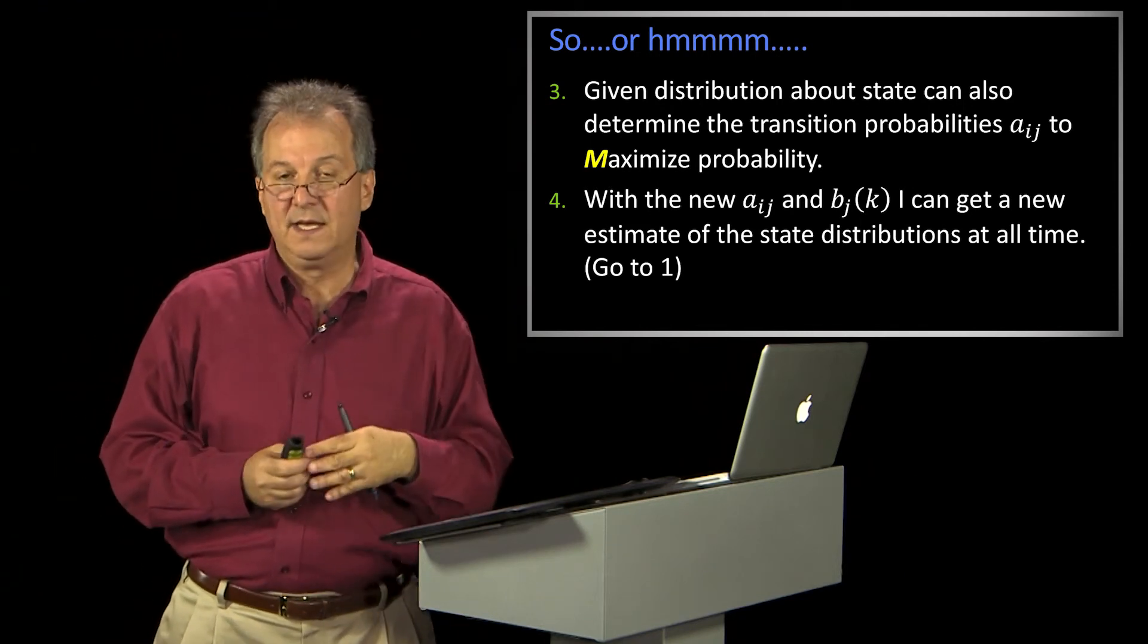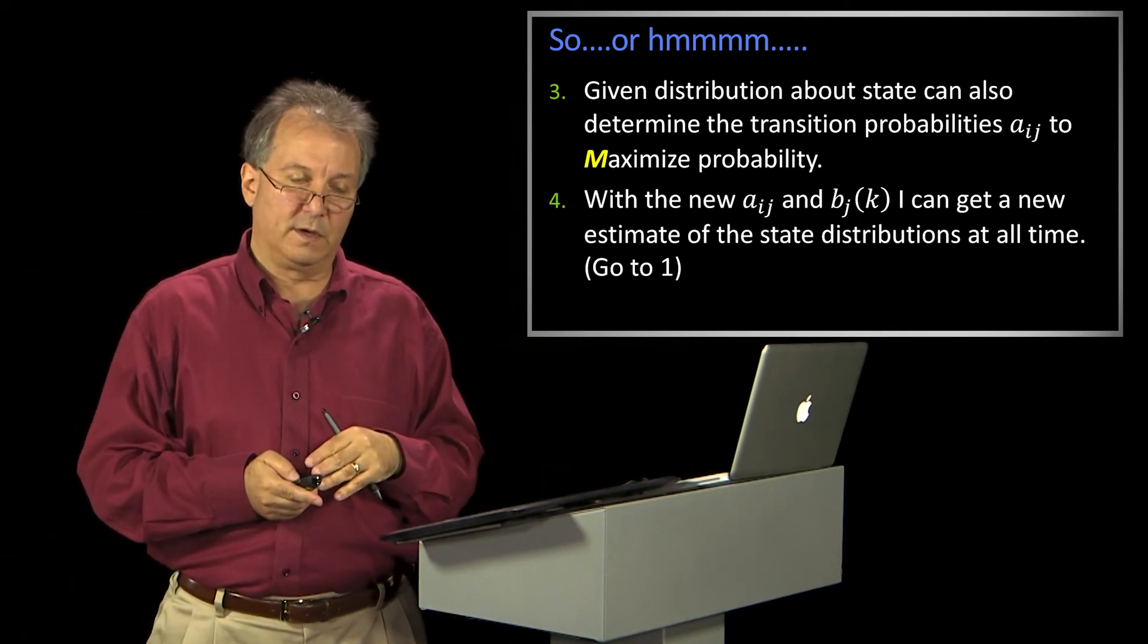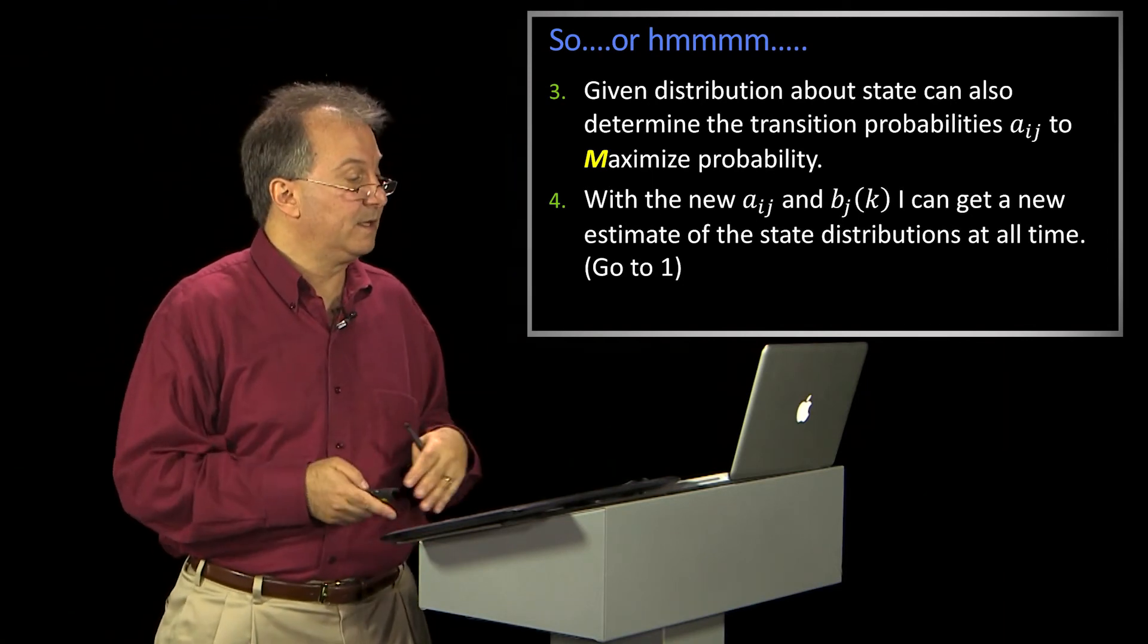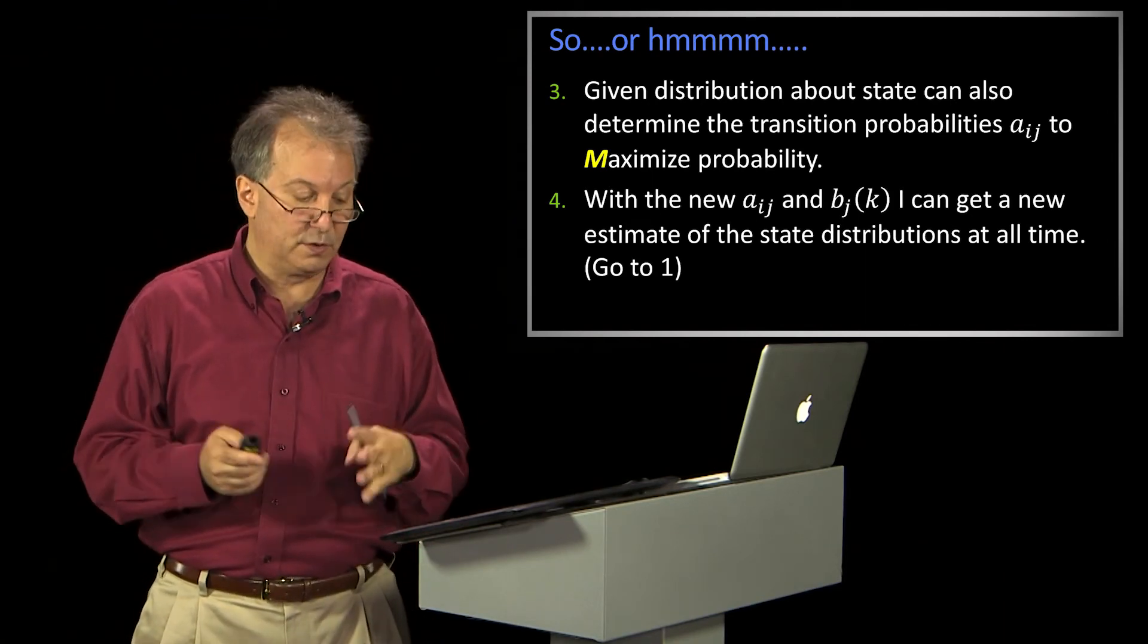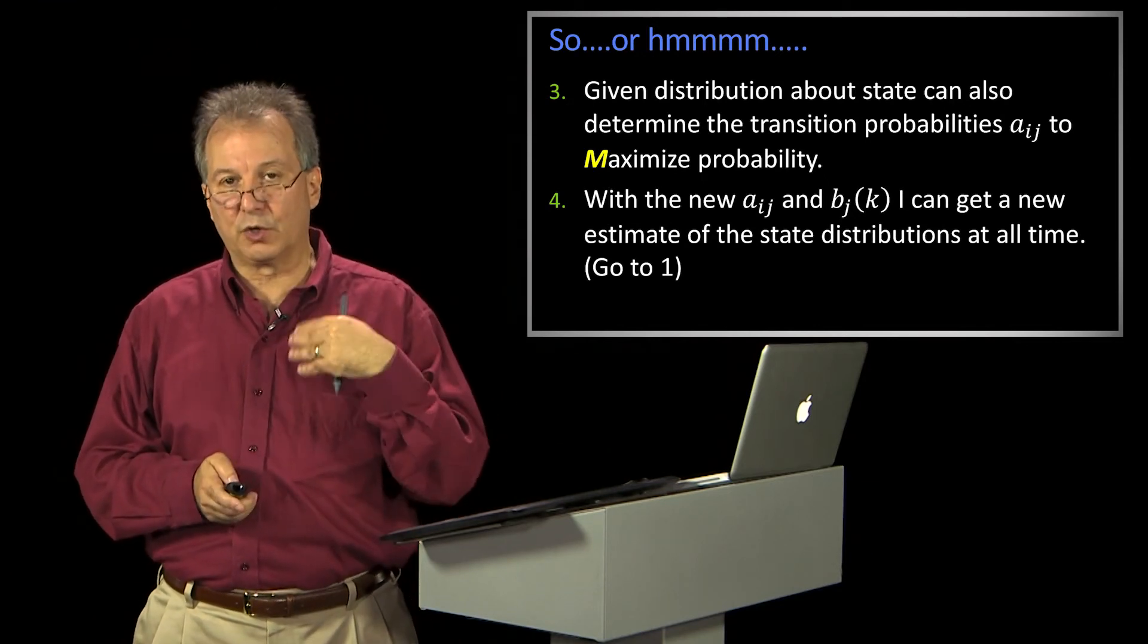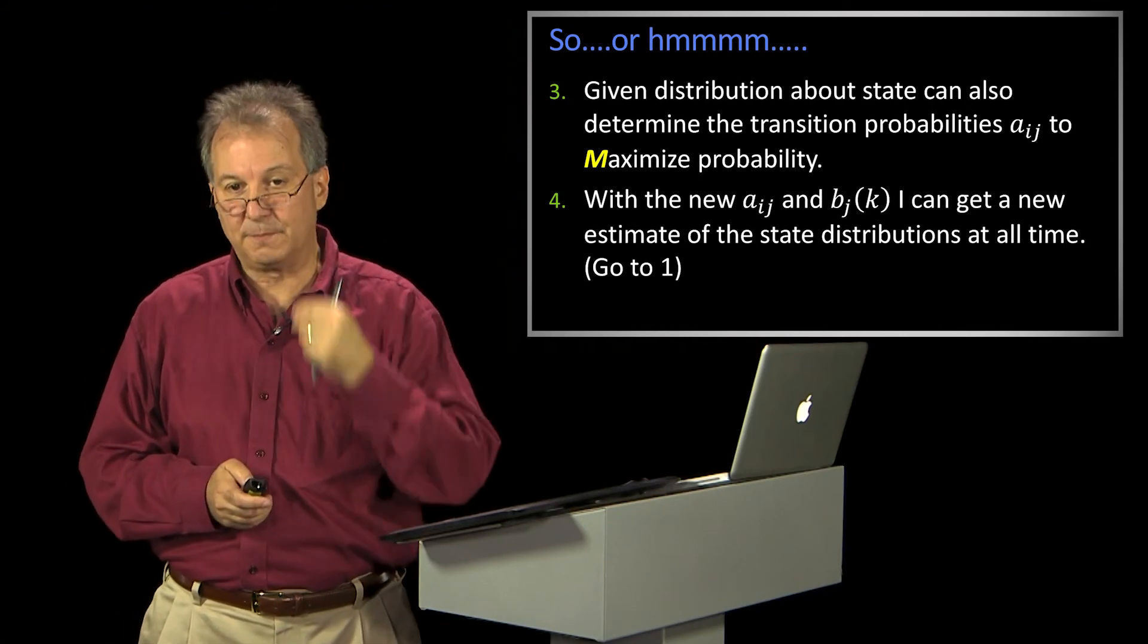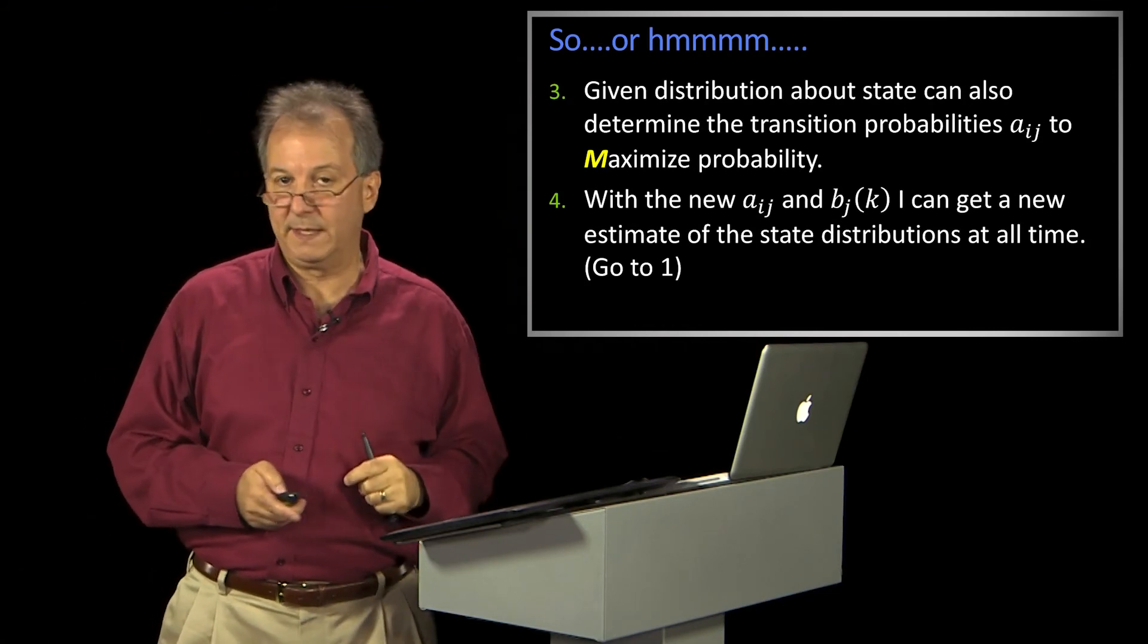And that iterative process is called expectation maximization. The particular algorithm for HMMs is called the Baum-Welch algorithm. Like I said, there's plenty of tutorials out there for you to look at. The fundamental idea is that by using these recursive algorithms and estimating the probability of being at a particular state at a particular time, I can re-estimate the machine.